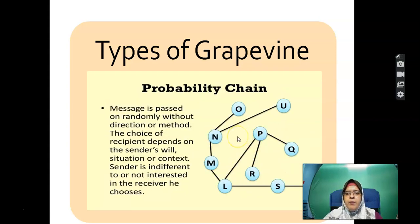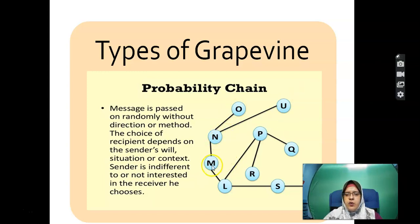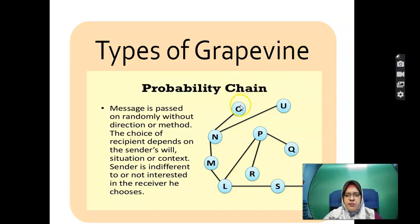In the probability chain, the message is passed randomly without direction or method, and the choice of recipient depends on the sender's will, situation or context — the sender is indifferent to or not interested in who receives it. For example, N tells O and U, then N tells M, M tells L and P, P tells R and Q, L tells S, S tells T. Anyone can get the news depending on who wants to share it.